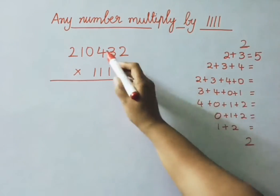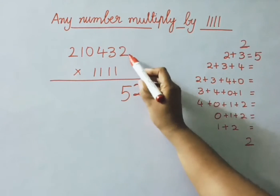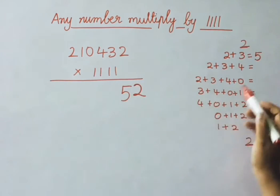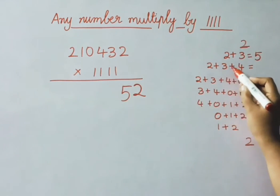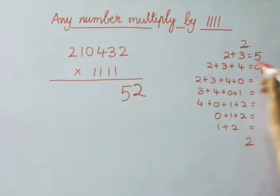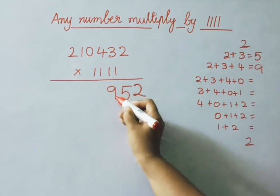Next step, 3 digits we have to add: 2 plus 3 is 5, 5 plus 4 is 9. See here: 2 plus 3 plus 4, so the answer is 9. Write down 9.